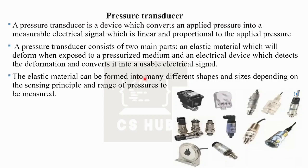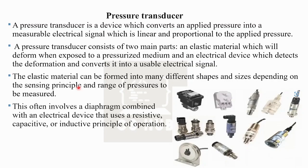The elastic material can be formed into many different shapes and sizes depending on the sensing principle and the range of pressures to be measured. We use the elastic material in the form of a diaphragm. The diaphragm is a thin layer combined with an electrical device that uses resistive, capacitive, or inductive principles of operation. The diaphragm is connected with an electrical device.